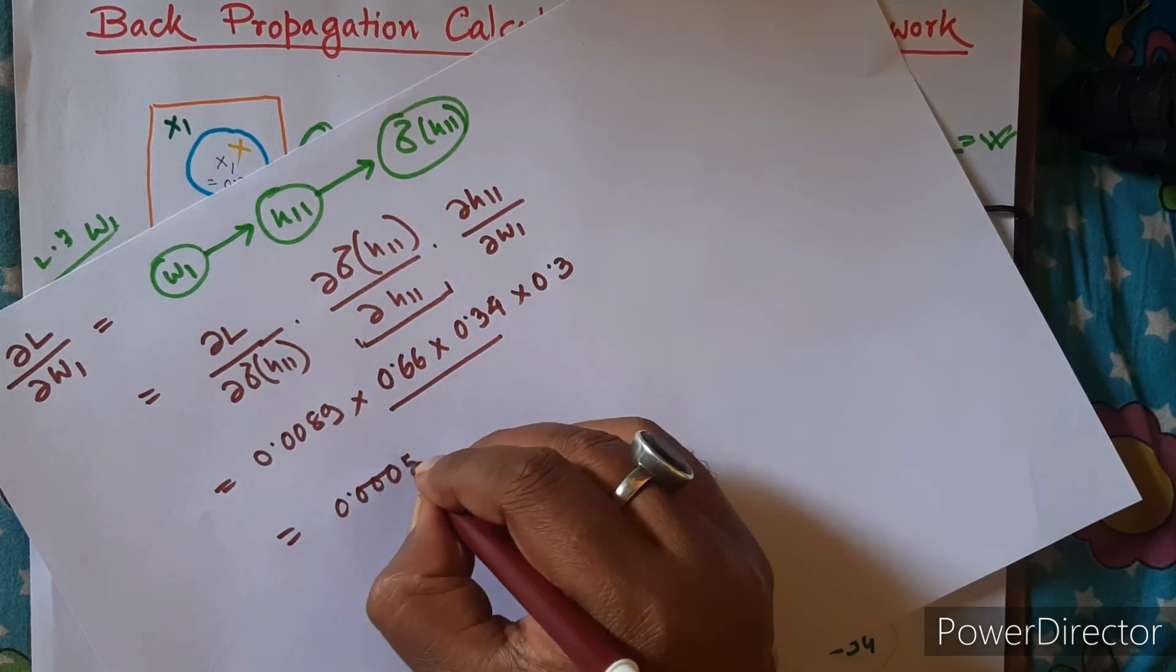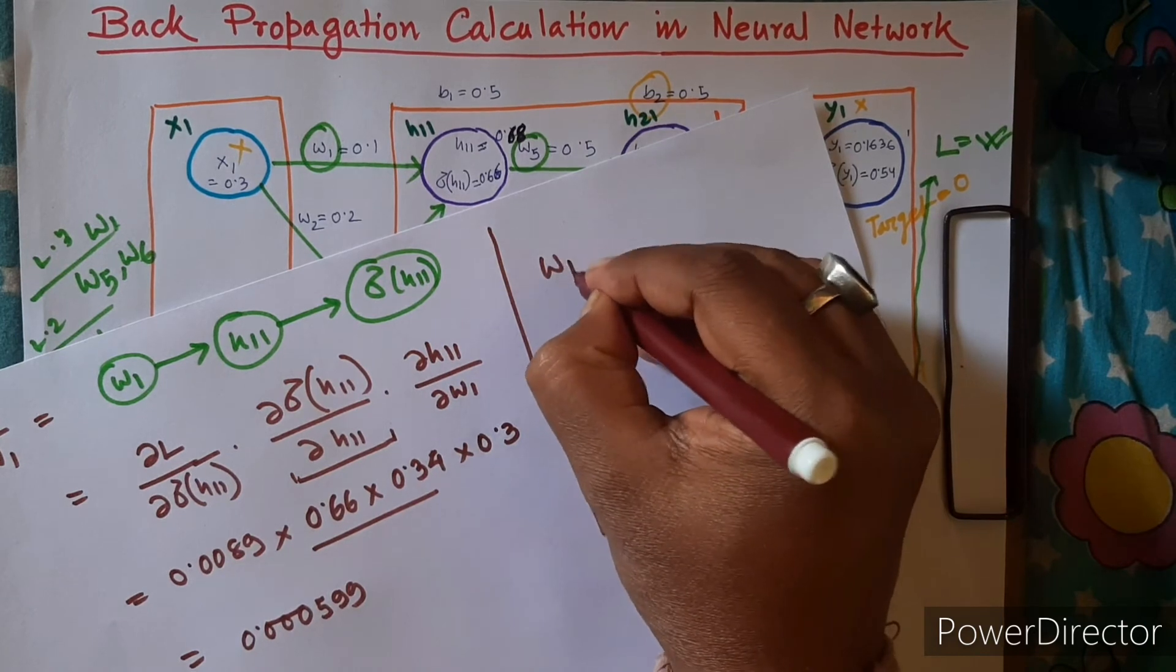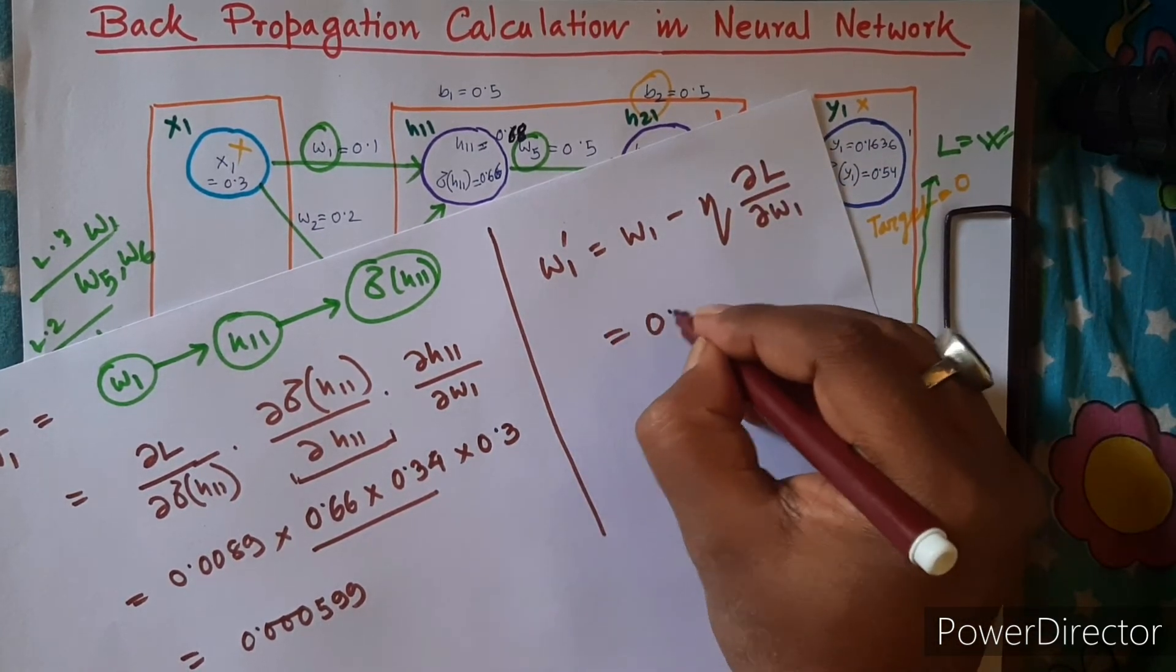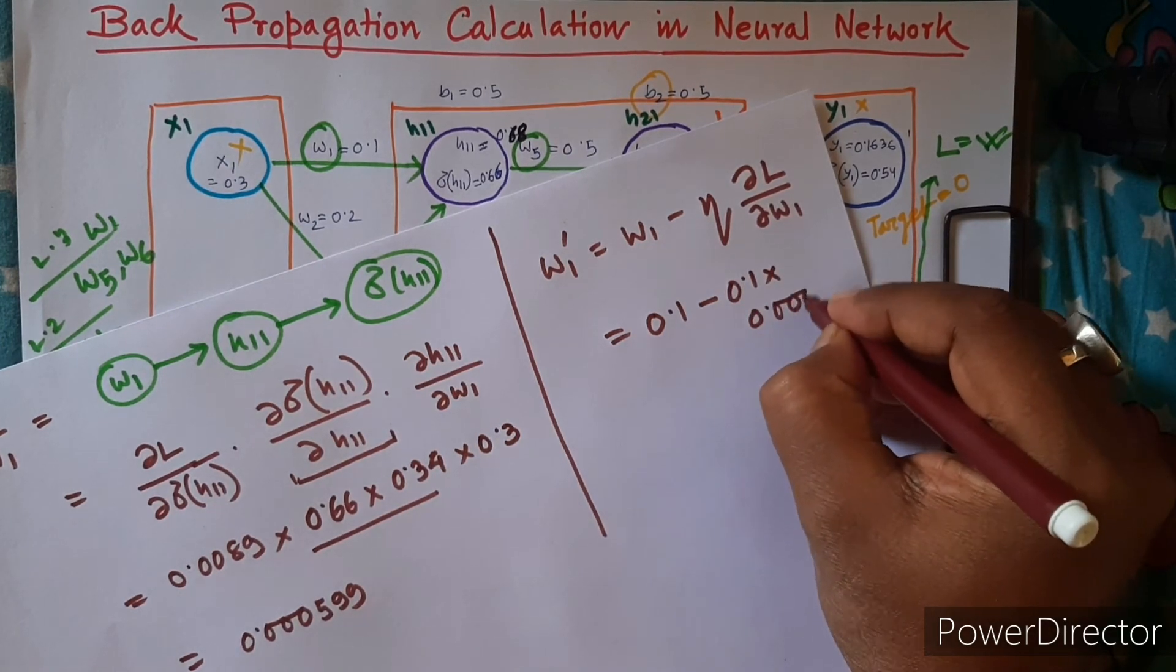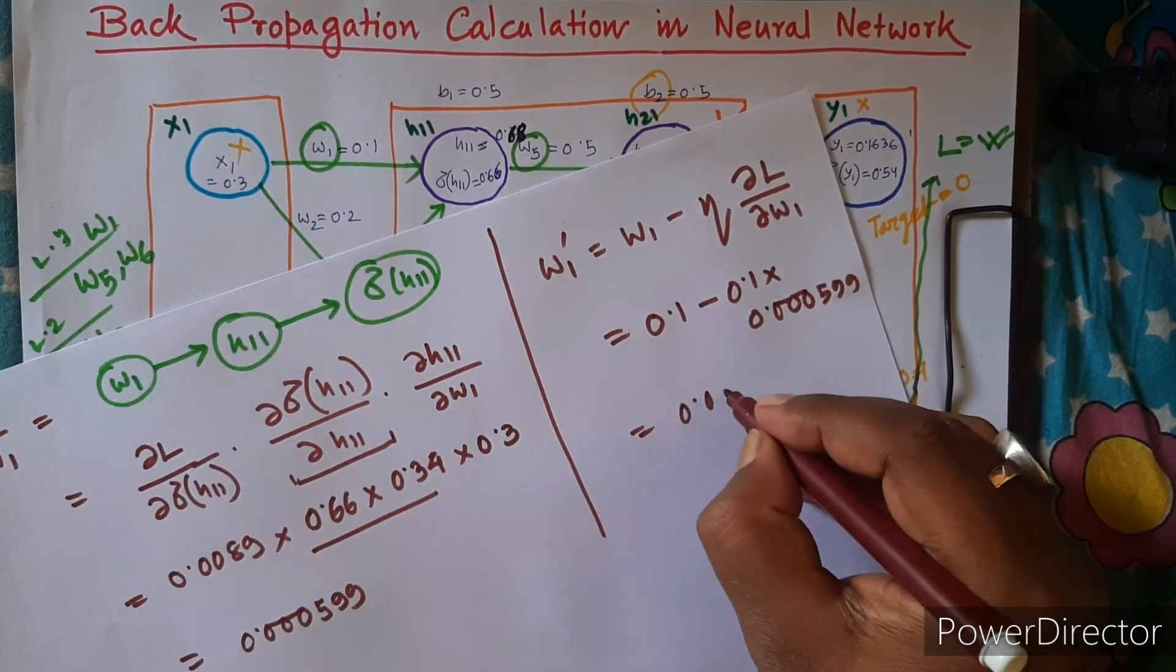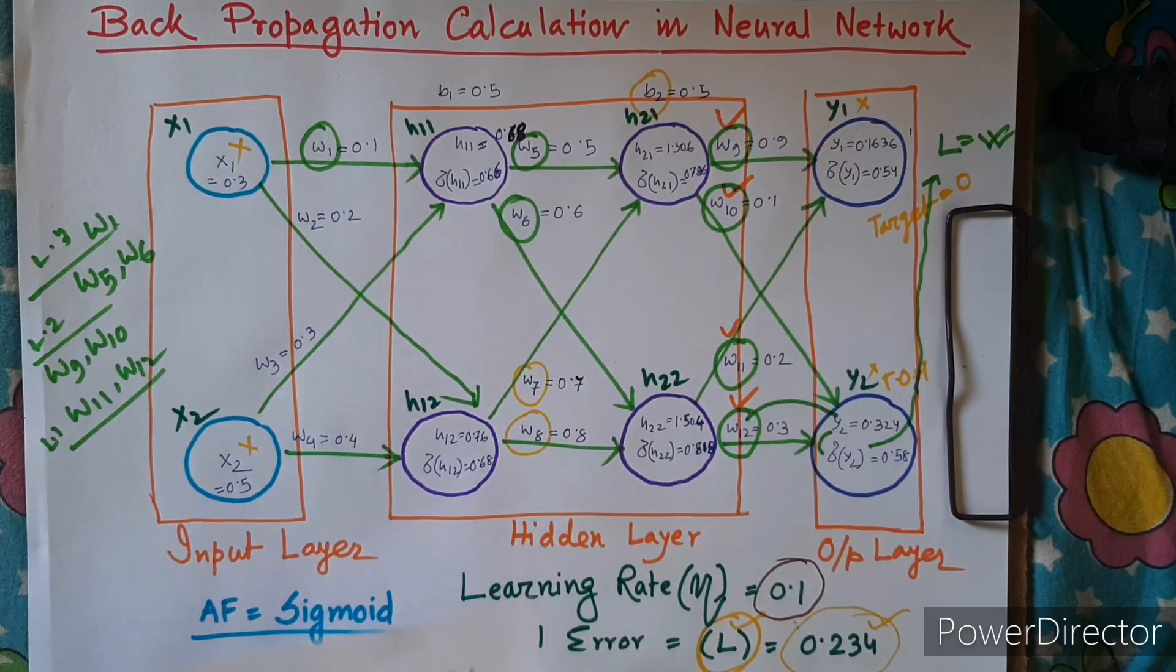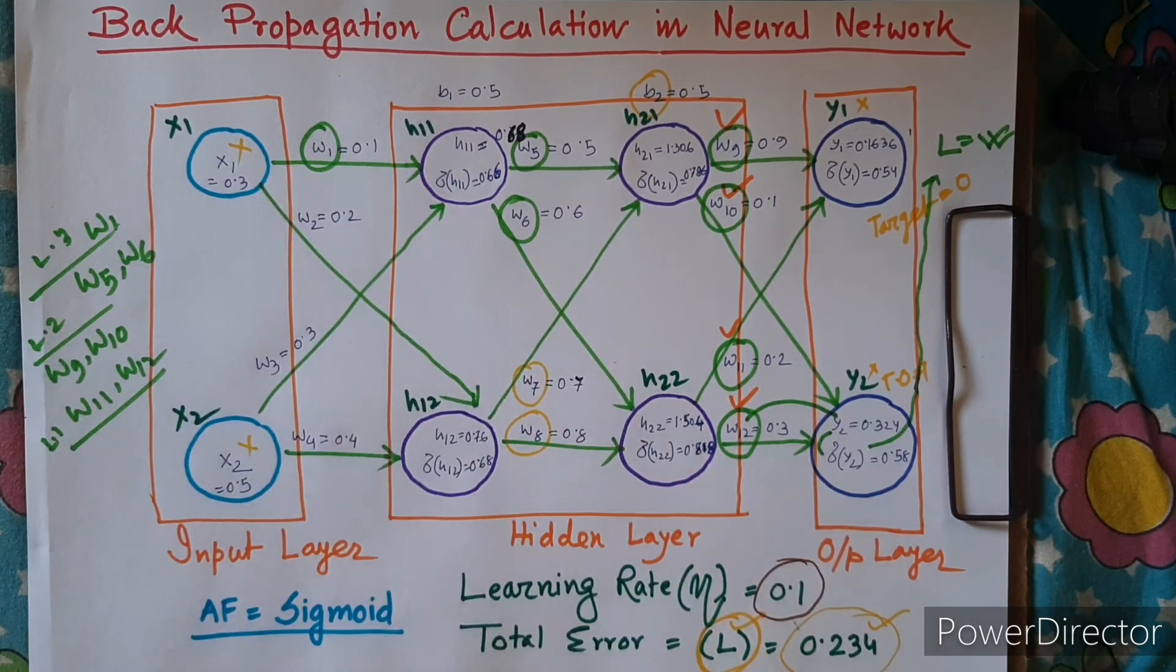A very low value - you can almost ignore. Well, just to calculate, so what will be the next value of W1?